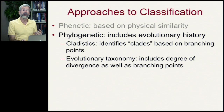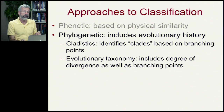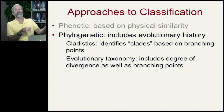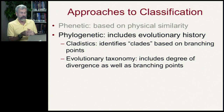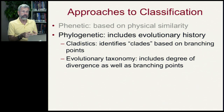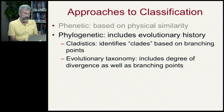Secondly, it's called evolutionary taxonomy. This not only takes into account that there are branching points, but it wants to know how long ago those took place. So it inspects the degree of divergence, as well as the fact that there was a branching point.